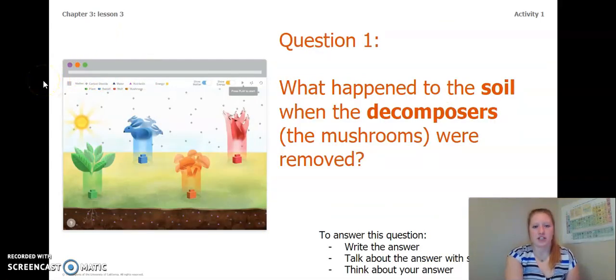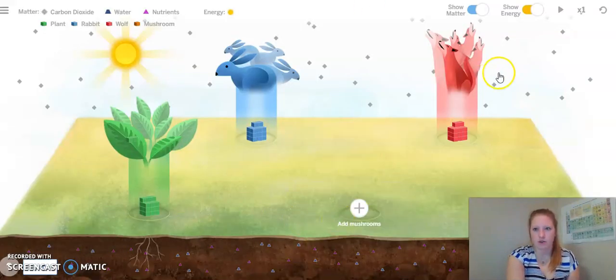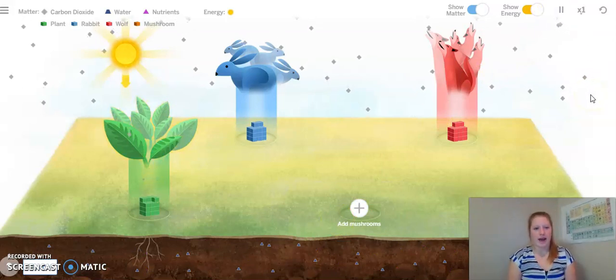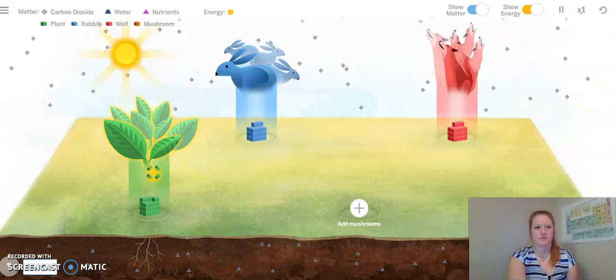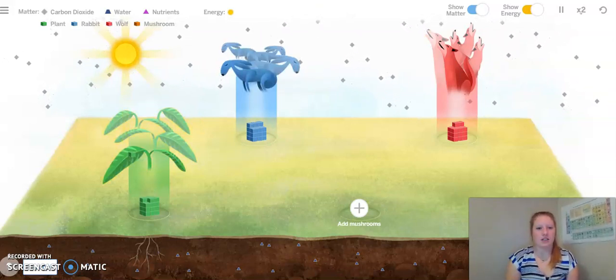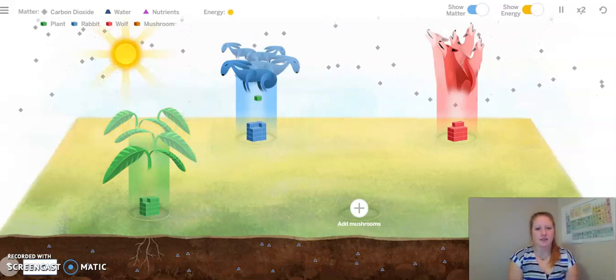As we do the simulation, let's think about this question. What happened to the soil when the decomposers or the mushrooms were removed? So let's go ahead and we're going to remove the mushrooms. Okay, and let's observe what happens. I can see that the rabbits have started to wither and look a little sad. Same with the plants. Let's keep observing and see what happens with the mushrooms still removed.